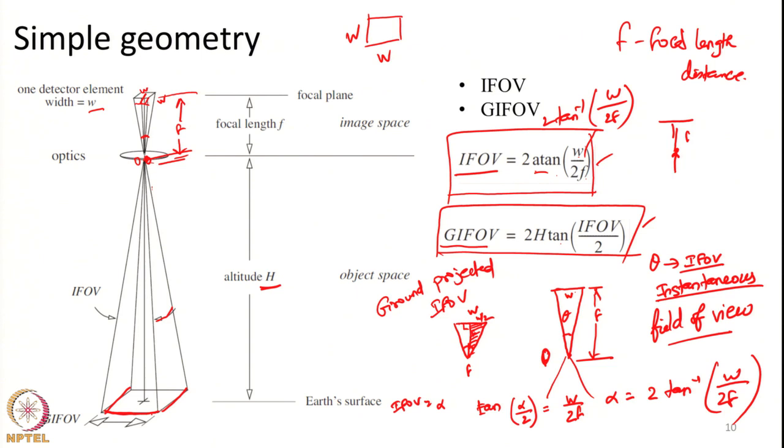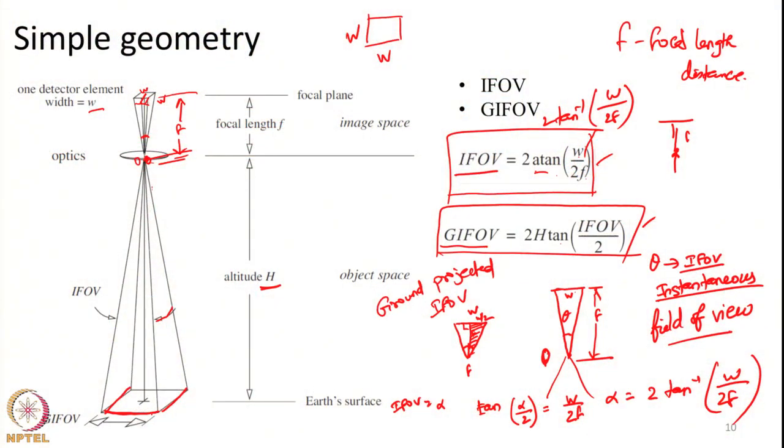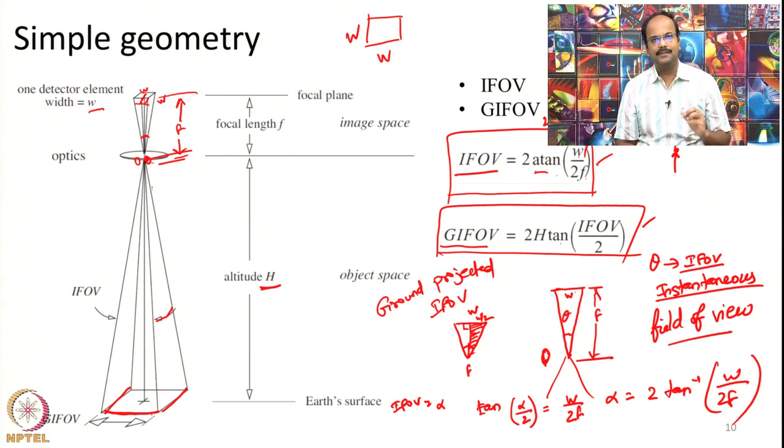Whatever features are within that particular GIFOV size, all those radiances will be averaged out and recorded as one single value in that detector. FOV is the total scan angle subtended by the scanner, or in a pushbroom sensor, the total angle subtended by all detectors in the across-track direction. Combined with orbital height, this gives us the swath width of the satellite.